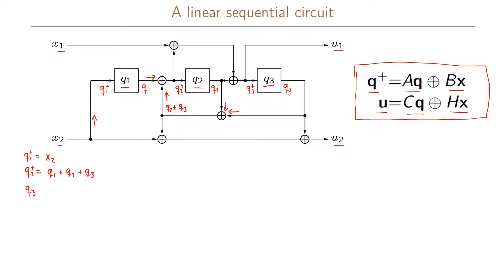The next state variable q3+ is the sum of the two inputs to this XOR function. It is q2 plus x1 plus what comes in, which is q2+ — but q2+ we know is q1 + q2 + q3. So we can simplify this as q1 + q3 + x1.